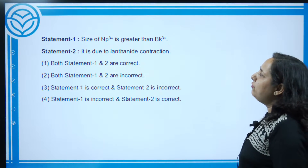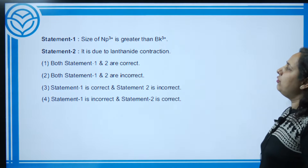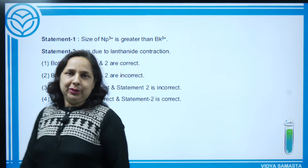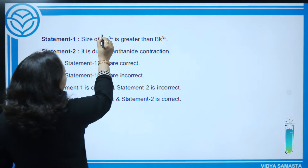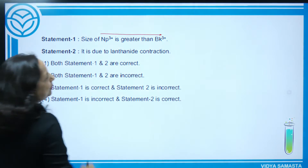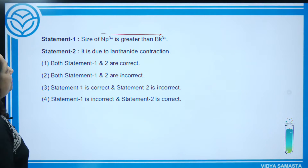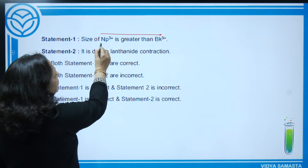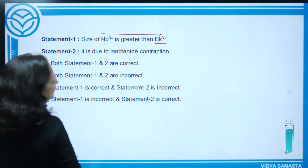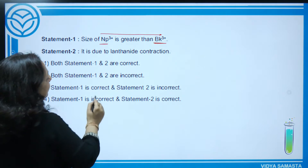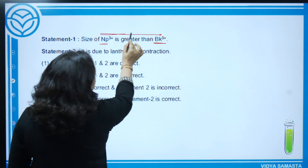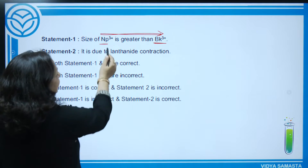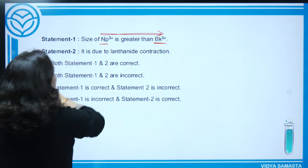Next question: size of neptunium³⁺ is greater than berkelium³⁺ — from actinoids. Moving from neptunium to berkelium is forward movement in the actinoid series. Along the period, atomic radius decreases, so neptunium (earlier) is larger than berkelium (later). Therefore neptunium³⁺ > berkelium³⁺ in size — this statement is correct.